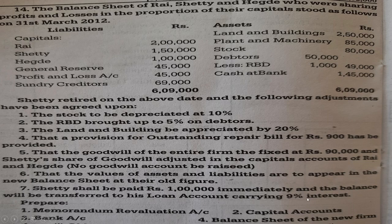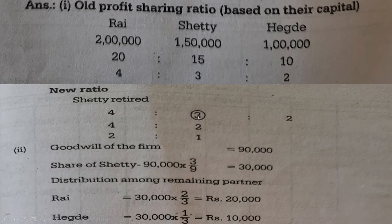The remaining balance is transferred to Shetty's loan account carrying 9% interest. We will now prepare the memorandum revaluation account, capital account, bank account, and balance sheet of the new firm. The old profit sharing ratio is based on their capital. Our capital is Rs. 2,00,000, Rs. 1,00,000, Rs. 1,00,000.